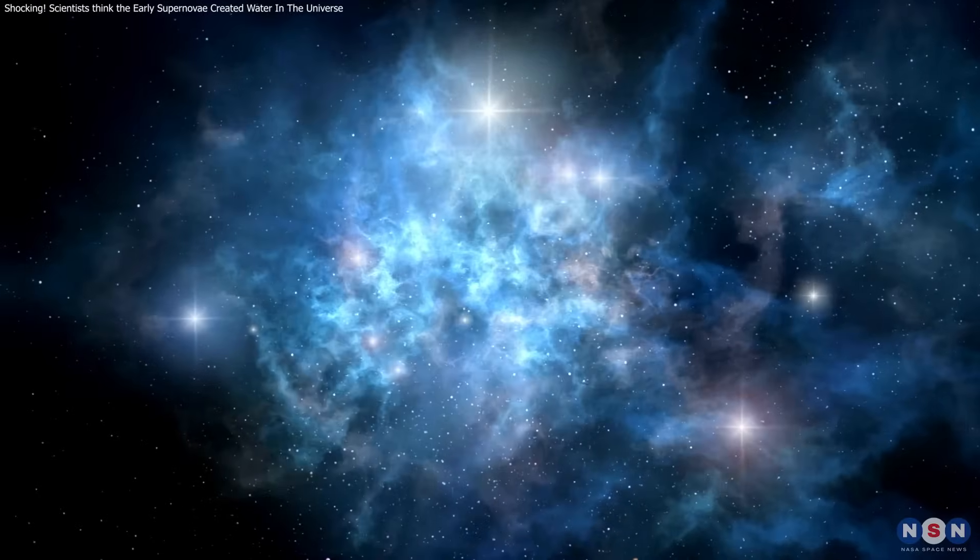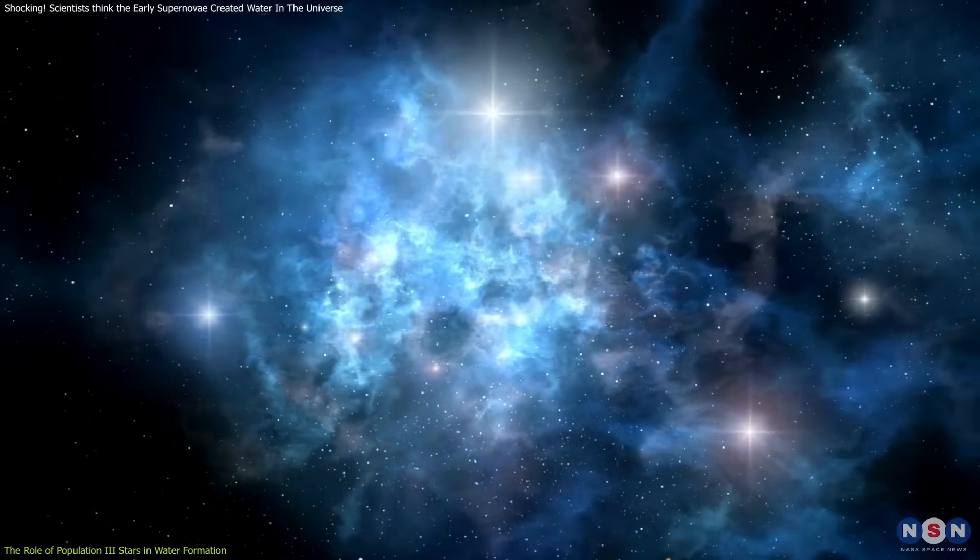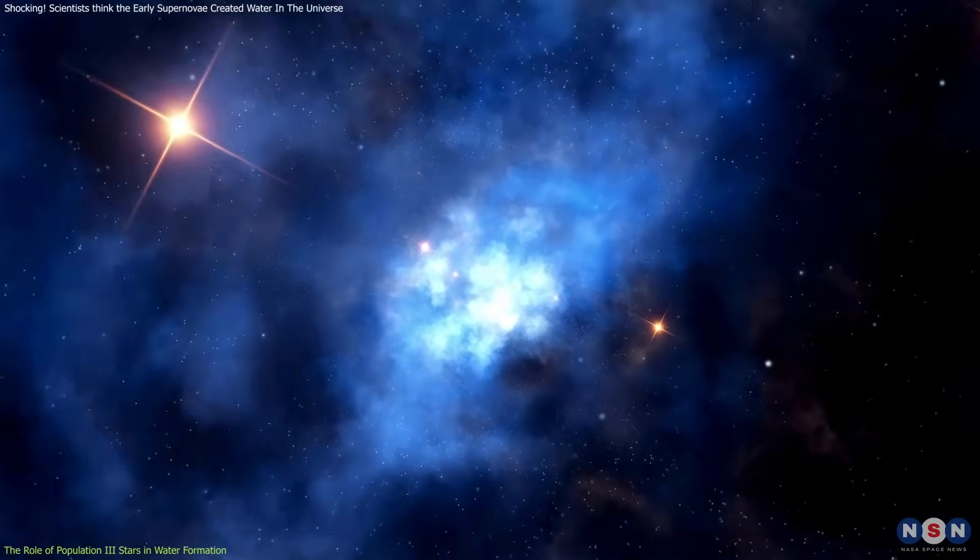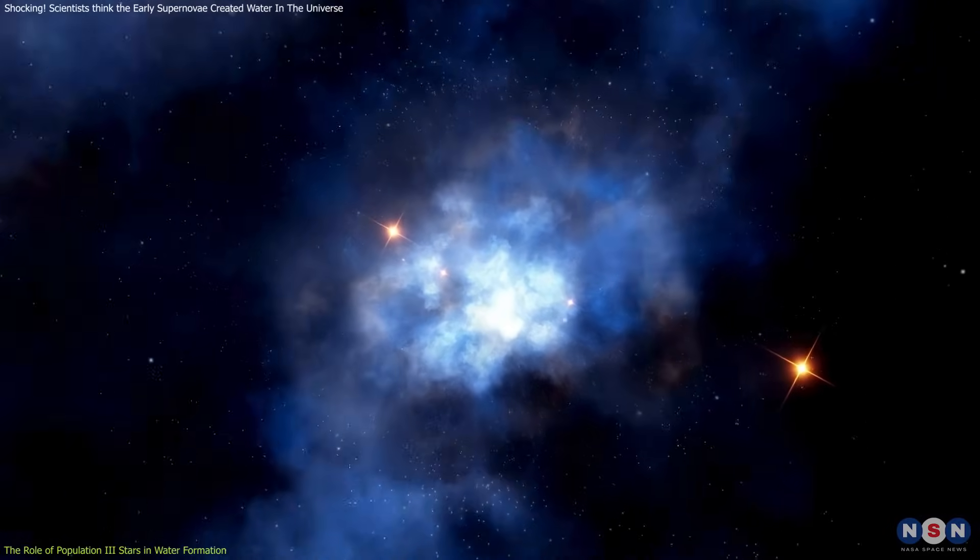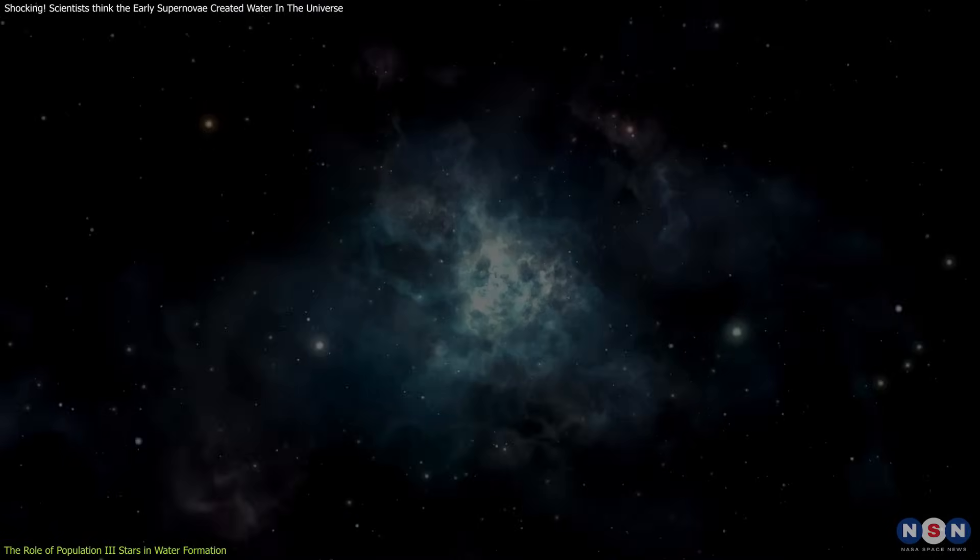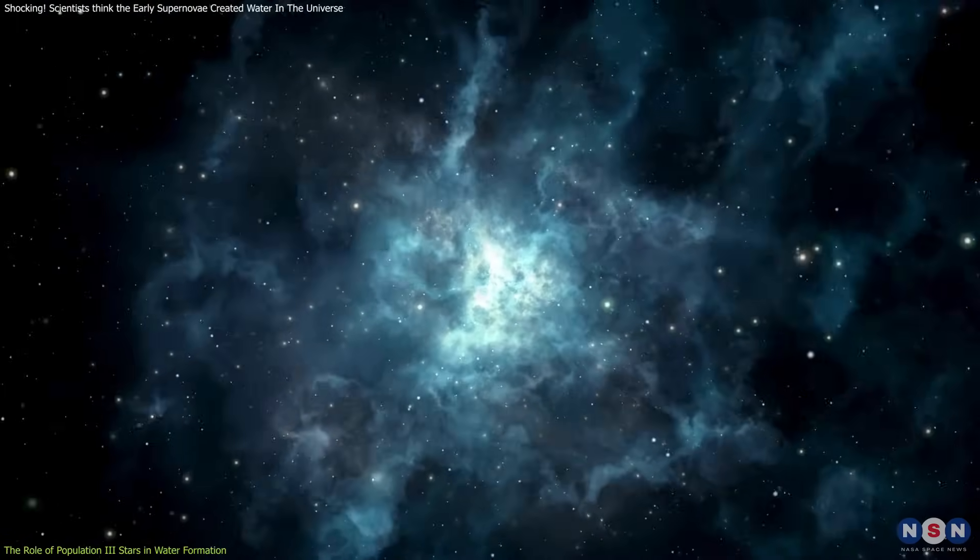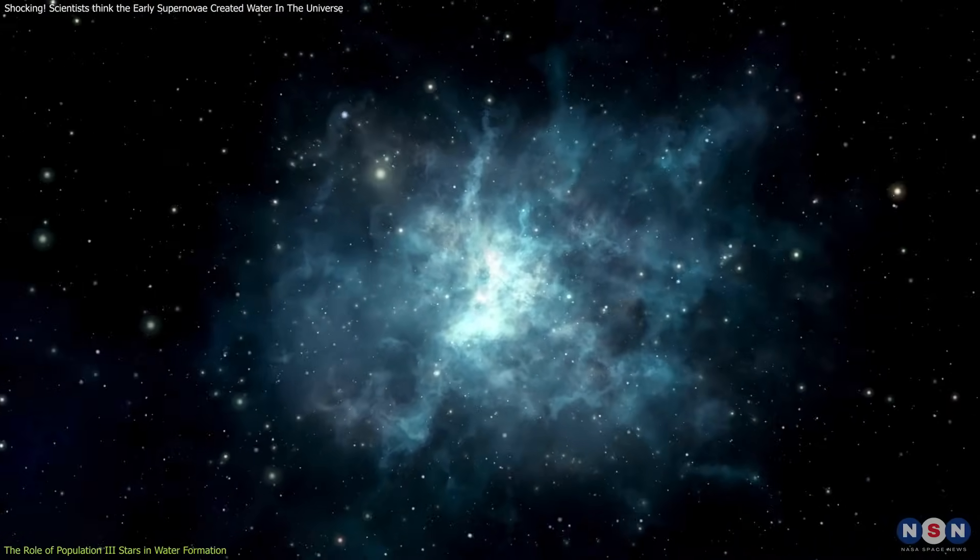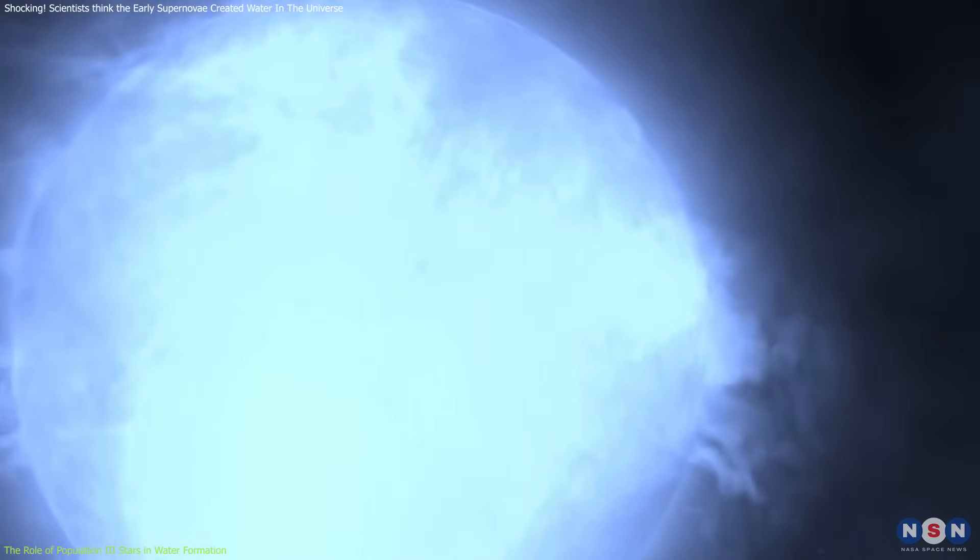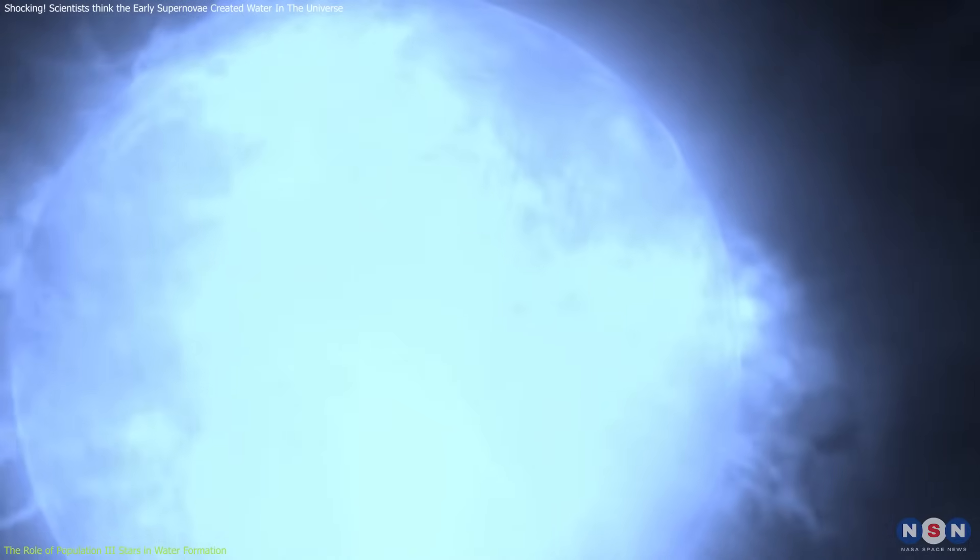The earliest stars, known as Population III stars, emerged from primordial gas composed almost entirely of hydrogen and helium. These stars were colossal, with masses ranging from tens to hundreds of times that of our Sun. Due to their immense size, they burned their nuclear fuel rapidly, leading to relatively short lifespans of just a few million years.